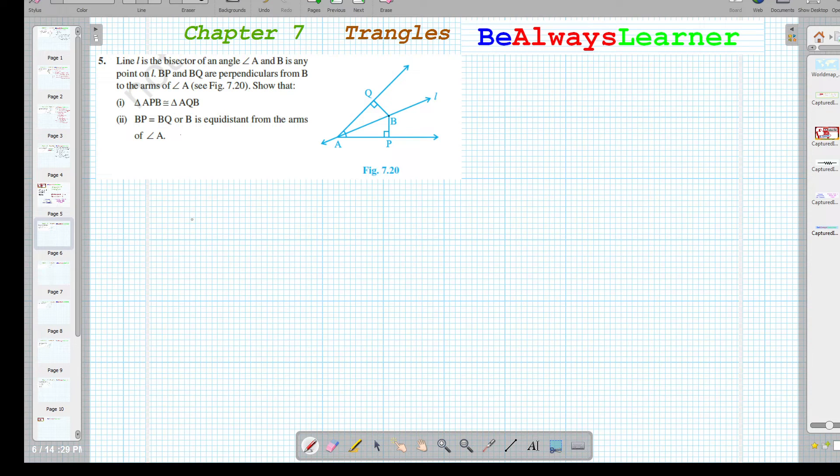First we have to show that triangle APB is congruent to triangle AQB.